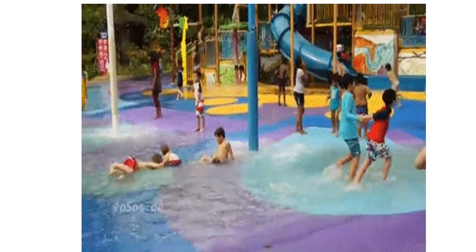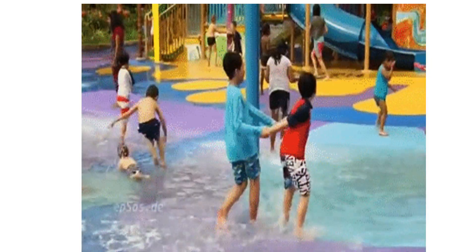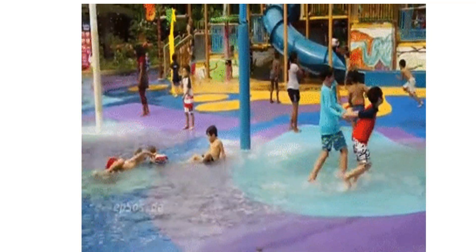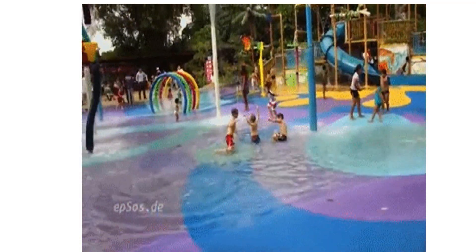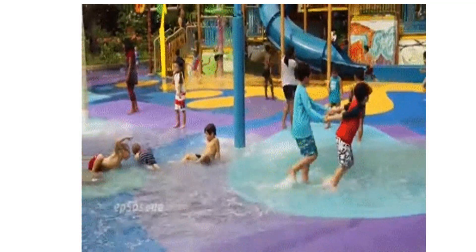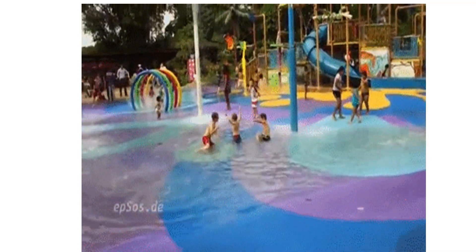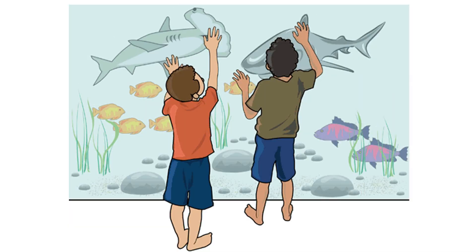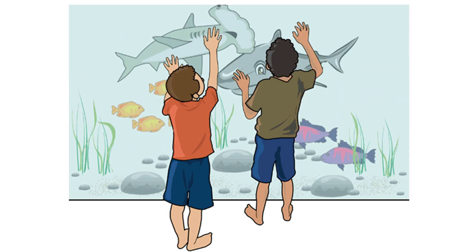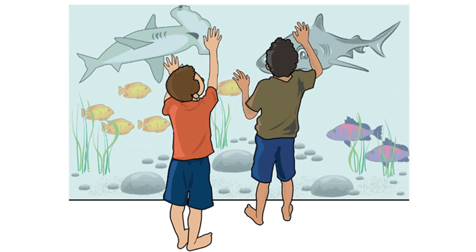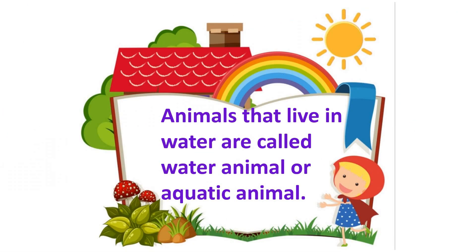Tell me children, do you like to play in water? You all like to play in water. Kya aapko pata hai? Kuch animals ka home water mein hota hai. Do you have any idea about that? Fish ka home water hai, and in the same way many animals live in water. Animals that live in water are called water or aquatic animals — jo animals water mein rehte hain, unhain water animals ya aquatic animals kehte hain.